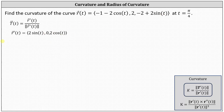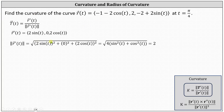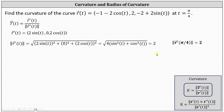Next we determine the magnitude of r prime of t, which equals the square root of the sum of the squares of two sine t, zero, and two cosine t. Simplifying under the square root, we have four sine squared t plus four cosine squared t. Factoring out the four, sine squared t plus cosine squared t equals one, giving us the square root of four, which equals two. So the magnitude of r prime of pi divided by four also equals two.